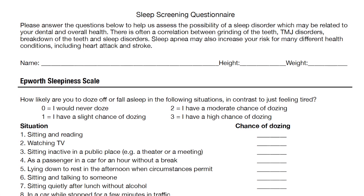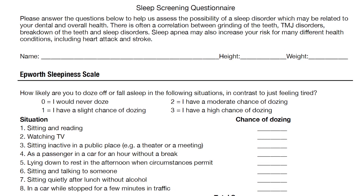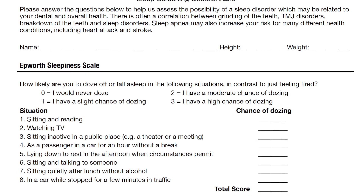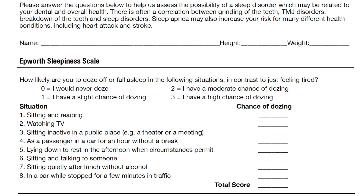You will notice that the form starts with the Epworth Sleepiness Scale questionnaire. This scale presents the patient with a series of situations and asks them to rank on a zero-to-three scale how likely they would doze or fall asleep during those situations — zero being they would never doze and three being a high chance of dozing. Unfortunately there is not a significant correlation between falling asleep and sleep apnea, but sleep doctors and many insurance companies want this information for future treatment purposes. If a patient has a higher number on the sleepiness scale, it could indicate excessive daytime tiredness, which is a risk factor and symptom of sleep apnea.